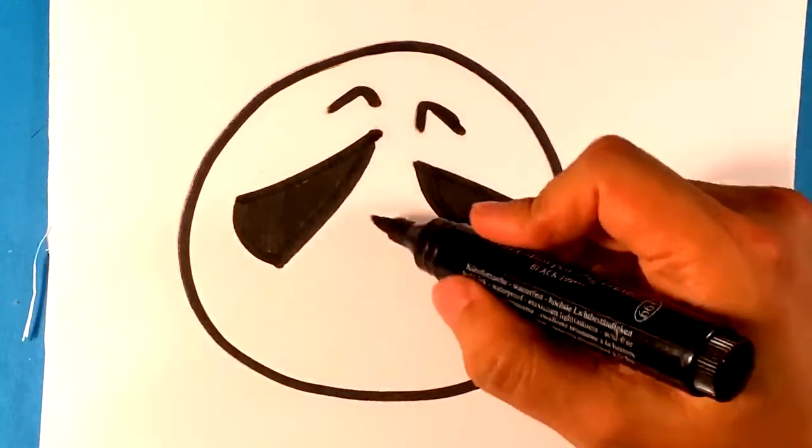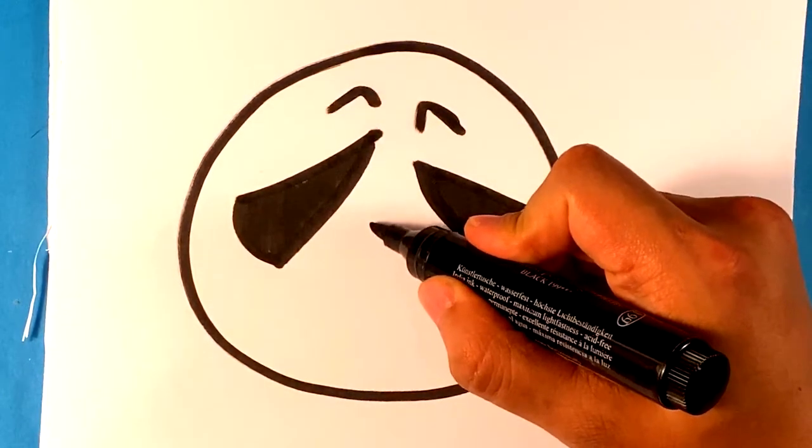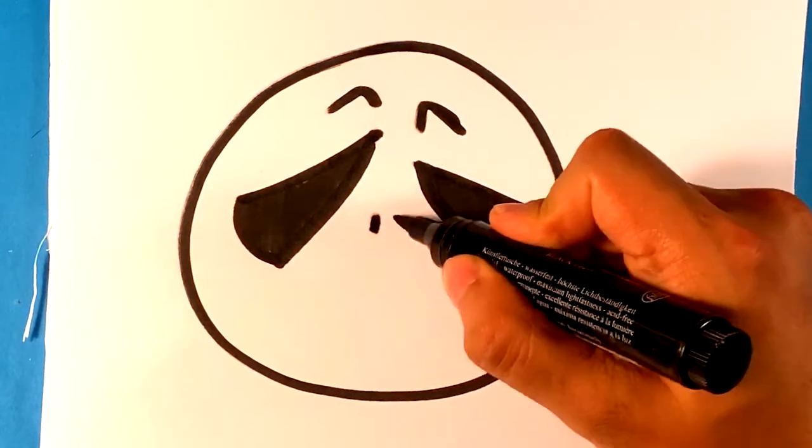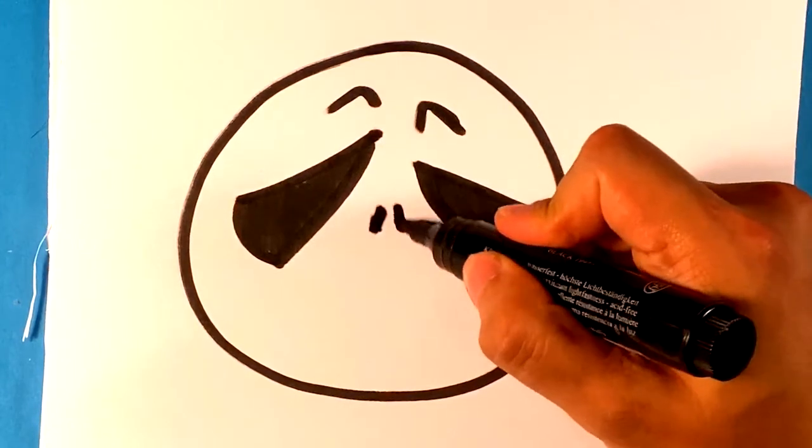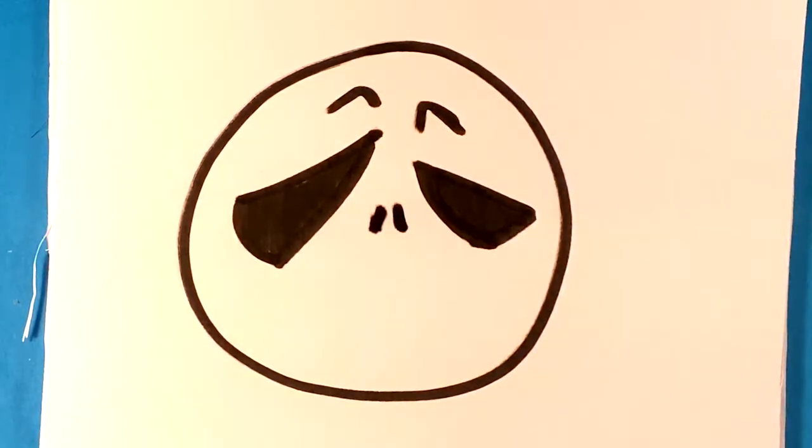Then I'm going to go in here and put in two lines. Real simple—it's just the nostrils. Really easy, I just kind of throw in these two notches there.